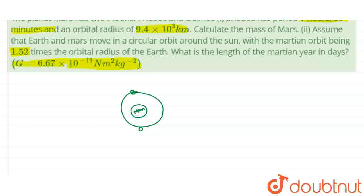So I can write that G·Mm upon R squared — that is the gravitational force. Here Mm is the mass of Mars and m is the mass of the moon, with orbital distance R. This is equal to the centripetal force, which is m·R·ω². Now we know that ω = 2π/T, so I can write this equation as m·R·(2π/T)². From this equation I can write the value of Mm, since m cancels out.